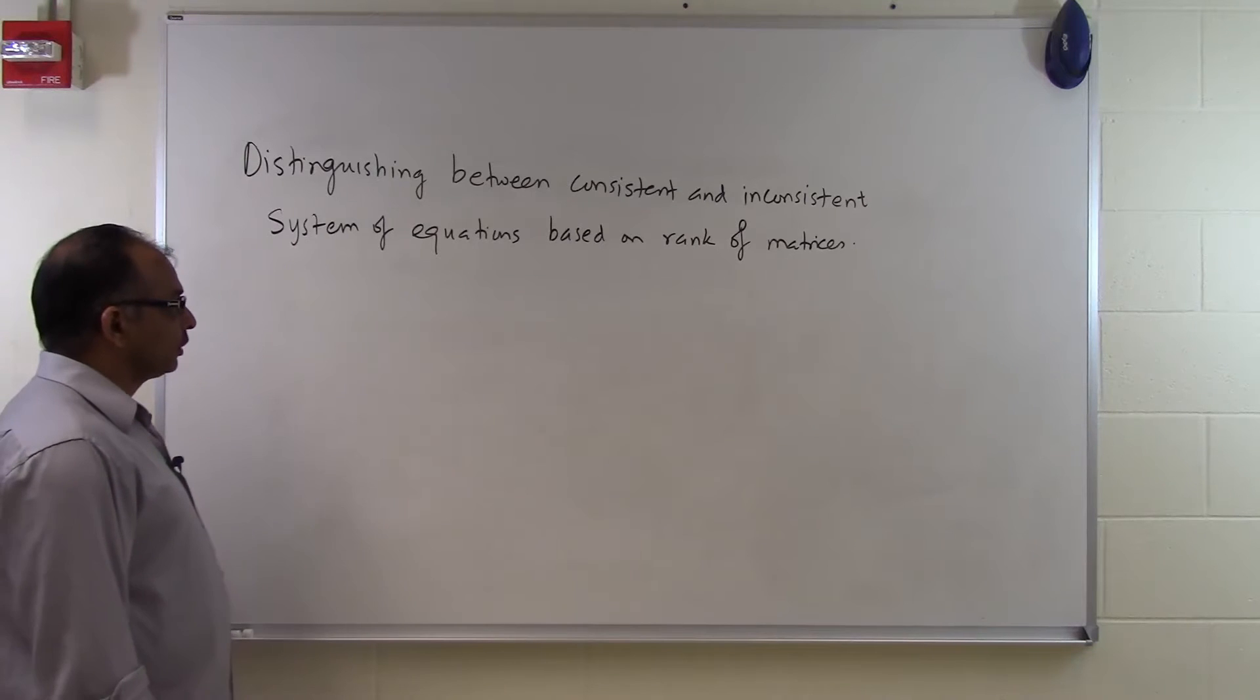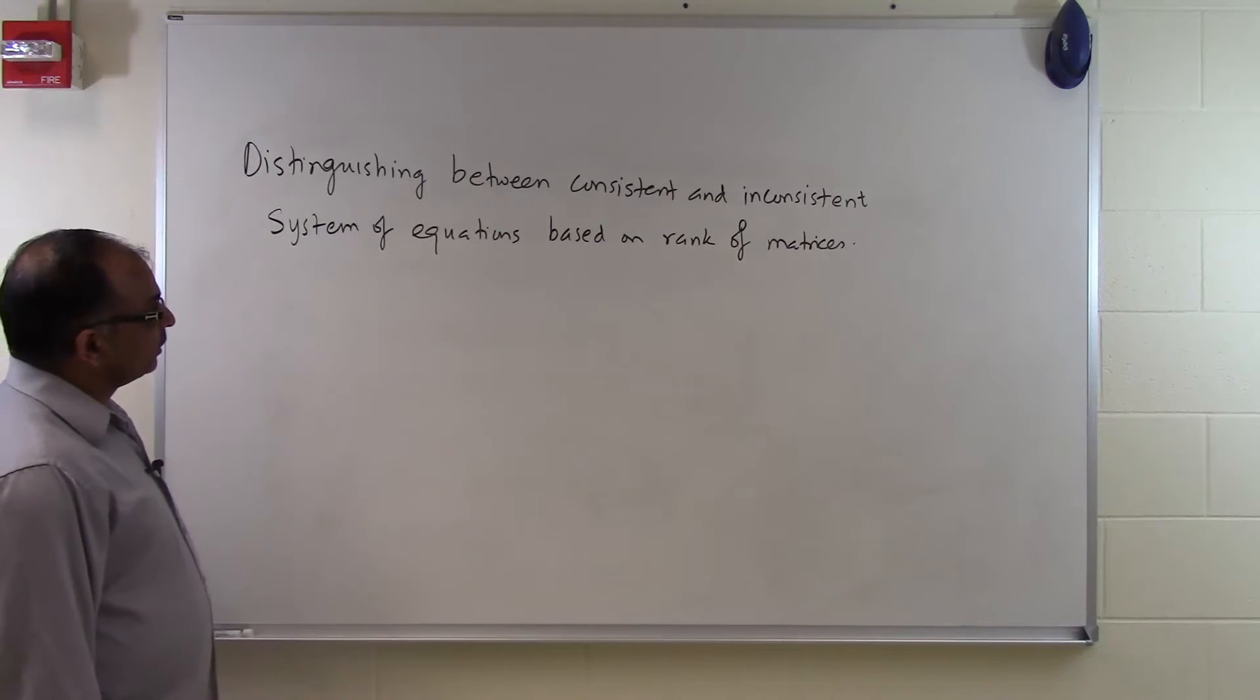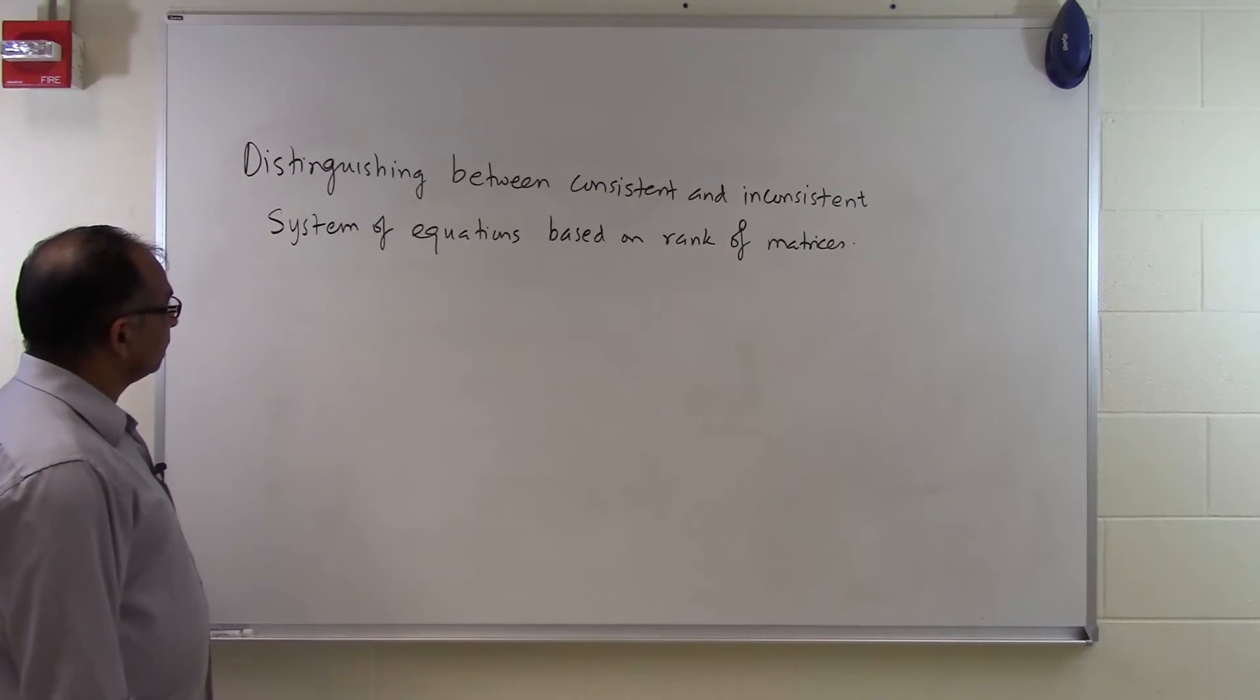Consistent meaning that there is a solution, whether that's unique or infinite. That's what we mean by consistent system of equations. Inconsistent means that there is no solution at all.